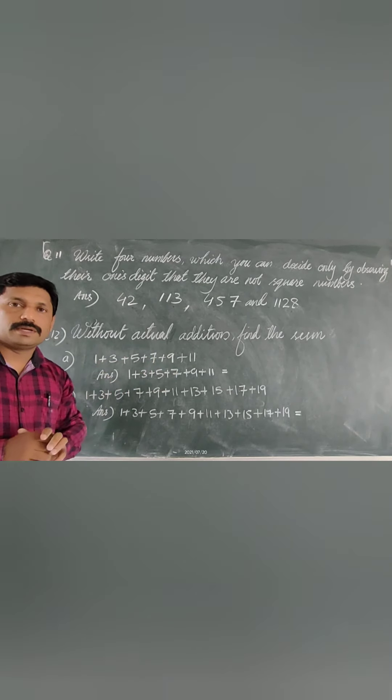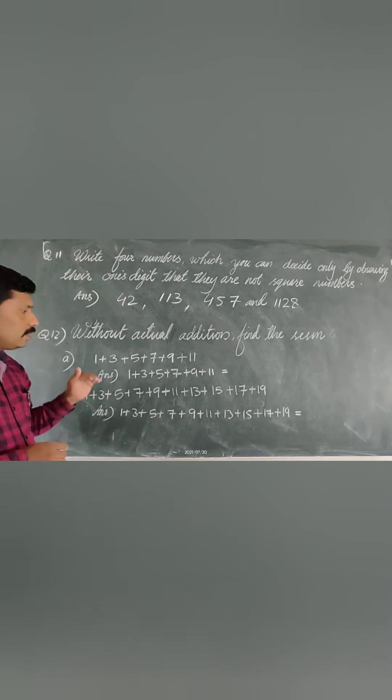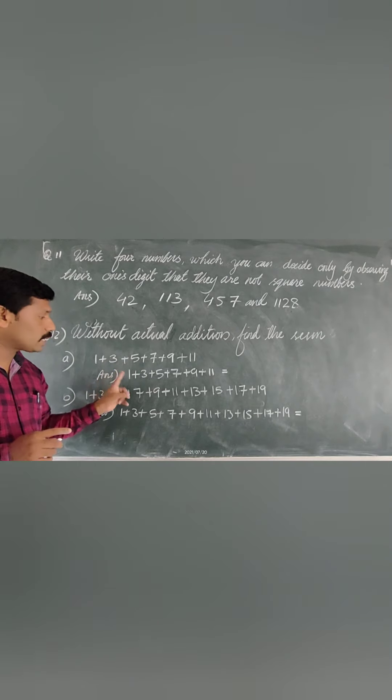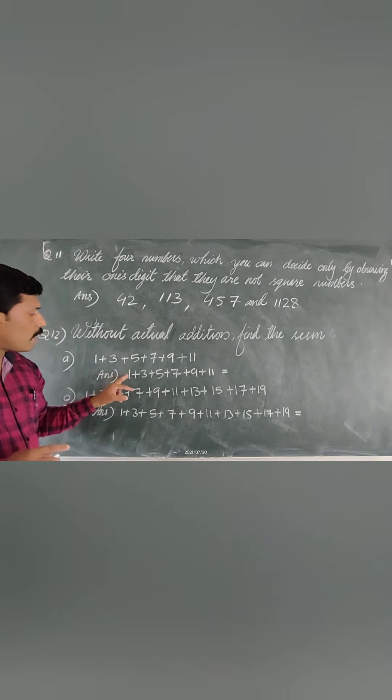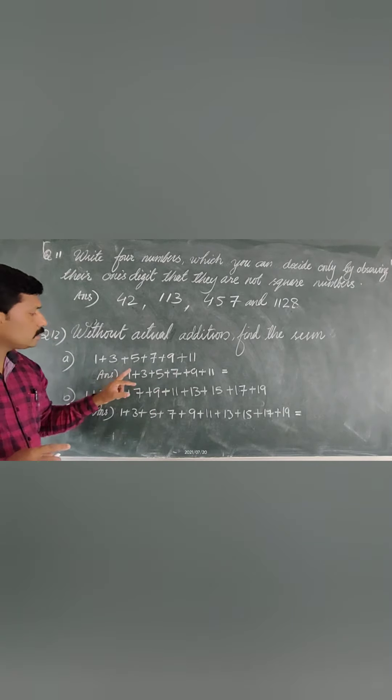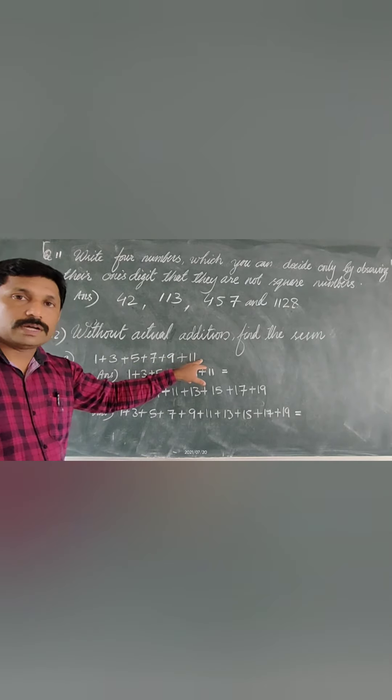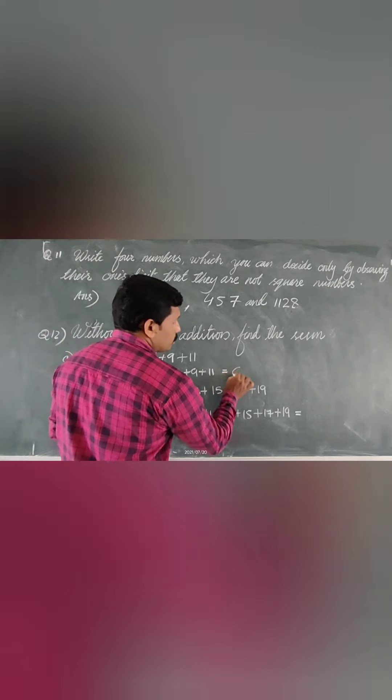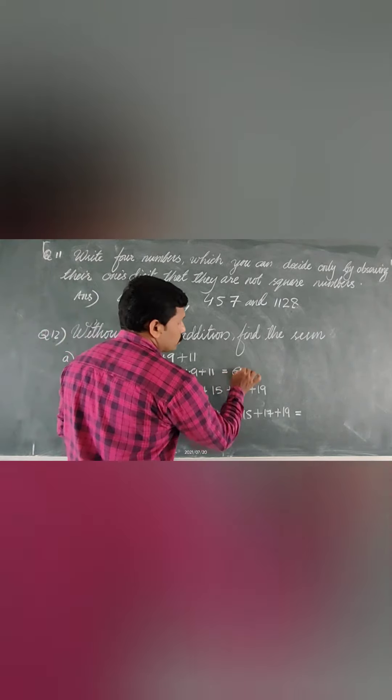Question number 12: without actual addition, find the sum of these odd numbers. The square of a number is expressed as the sum of the first n odd numbers. To find which square this equals, count how many odd numbers are being added. Here: 1, 3, 5, 7, 9, 11 — that means 6 odd numbers are added. So this sum equals 6 squared, which equals 36. If we add these numbers, we get 36.